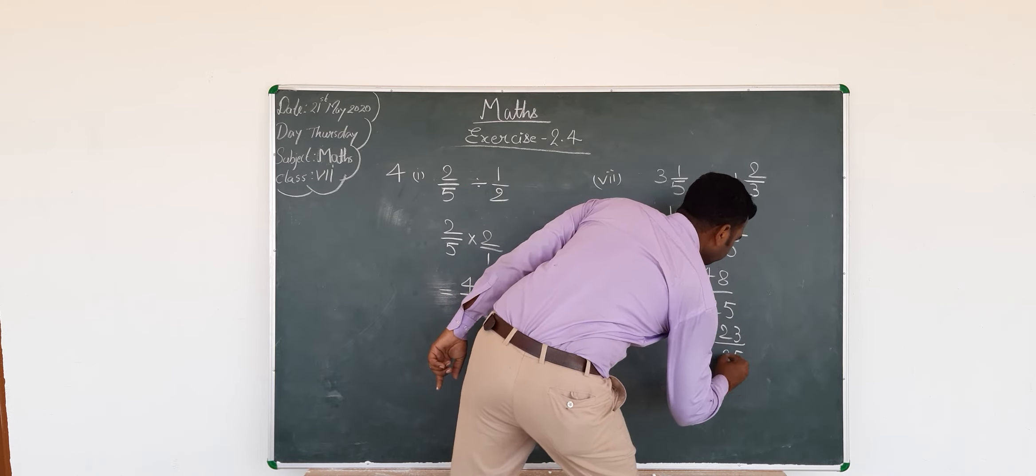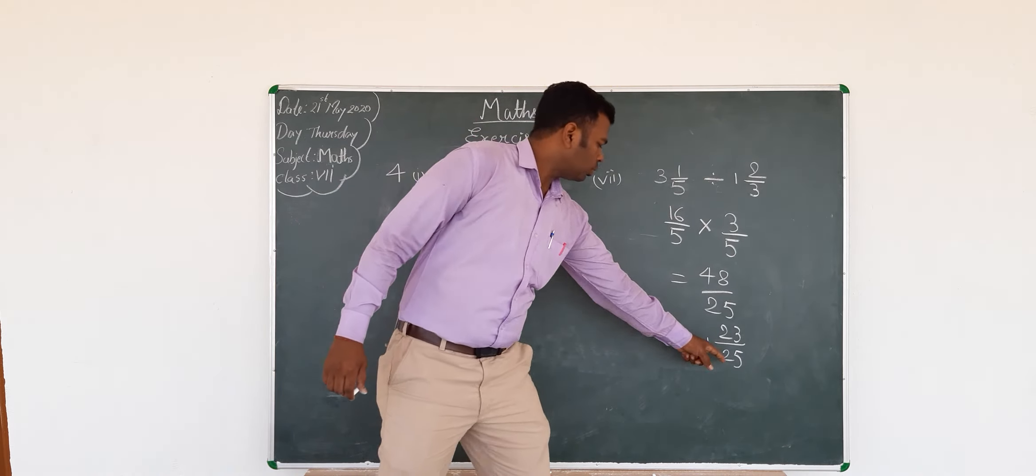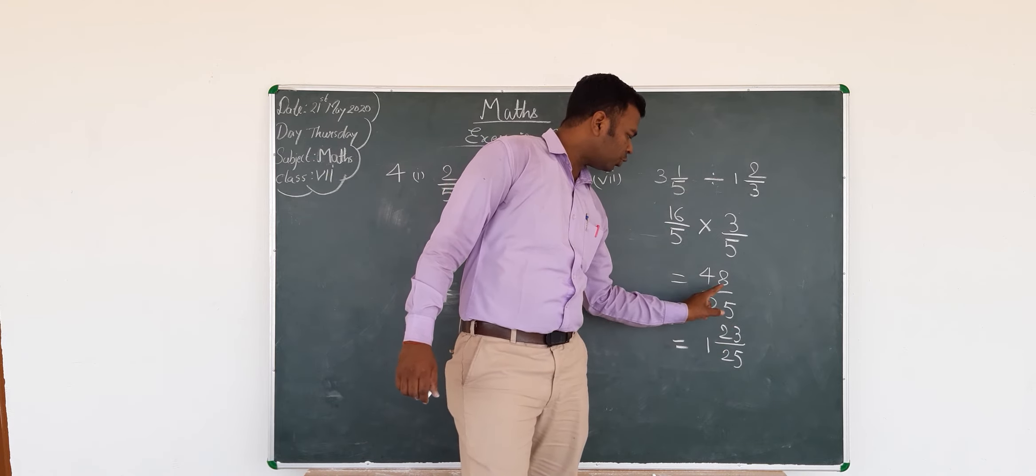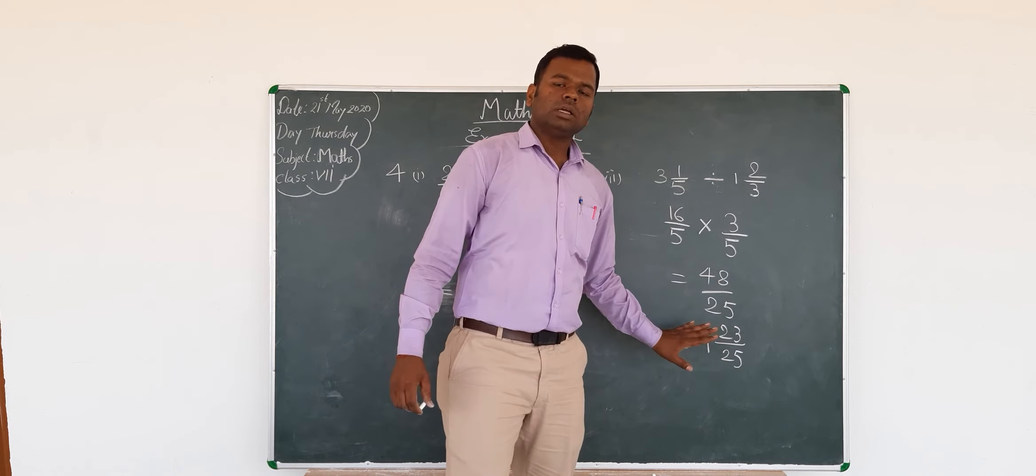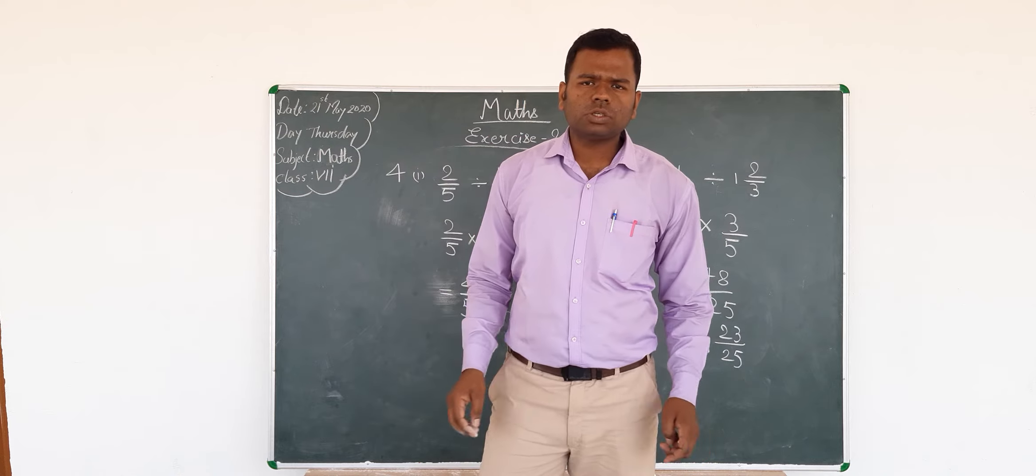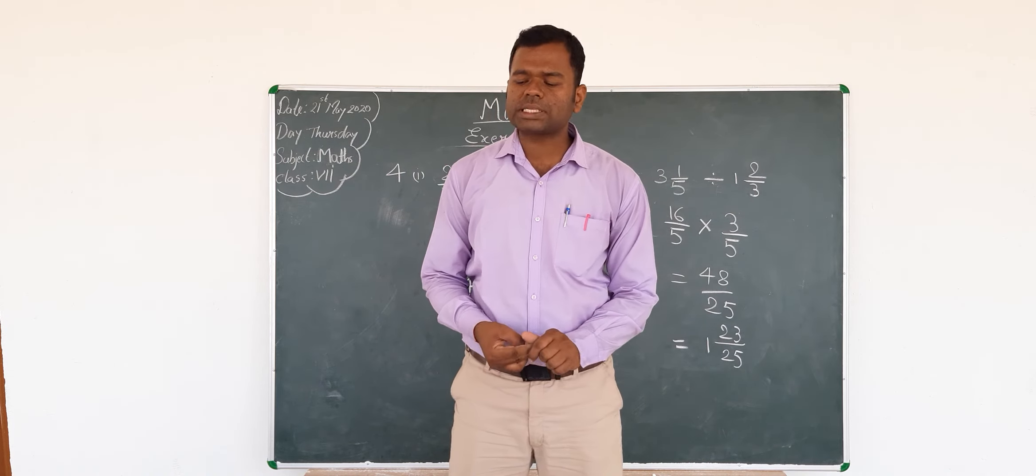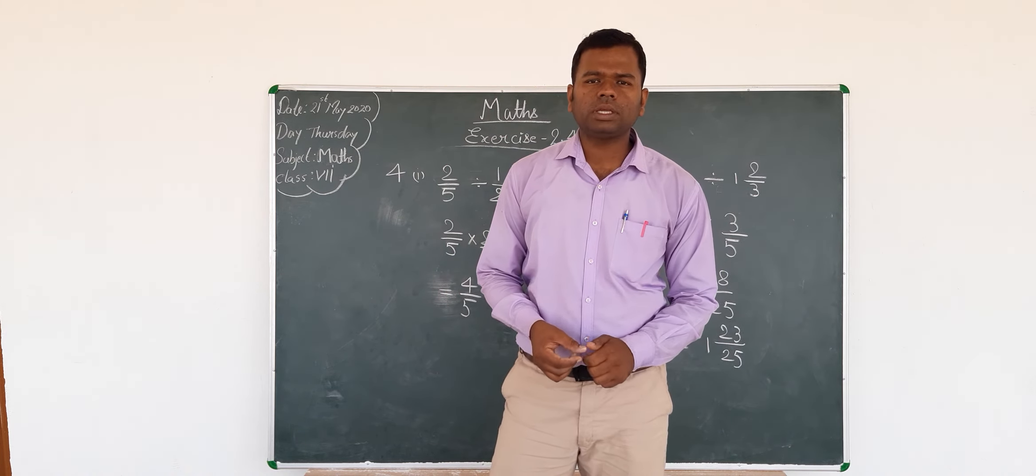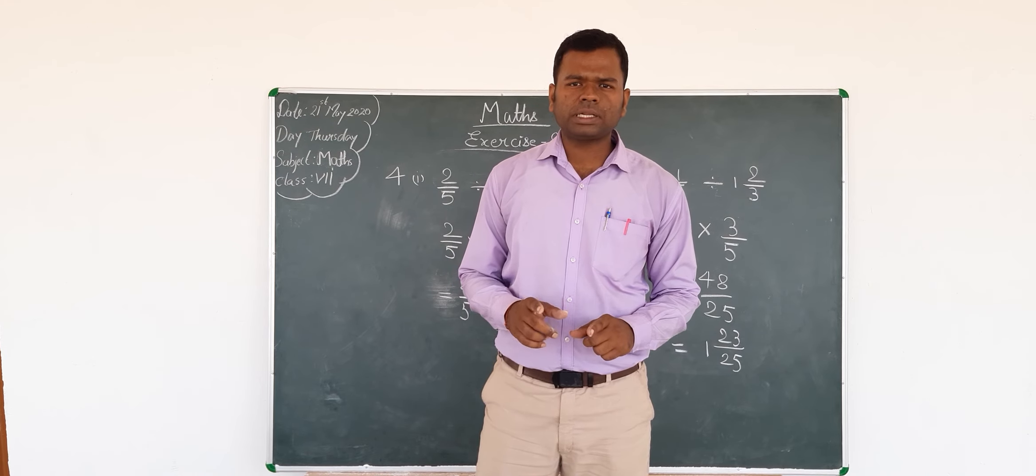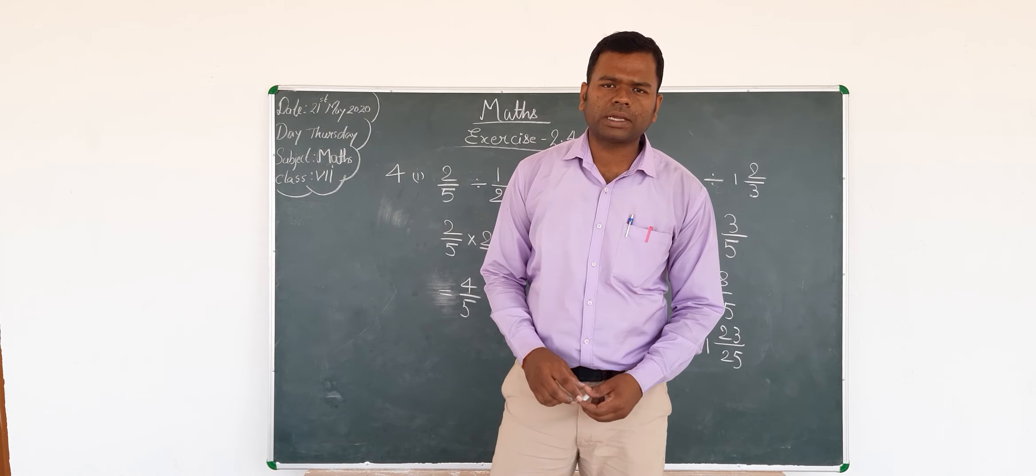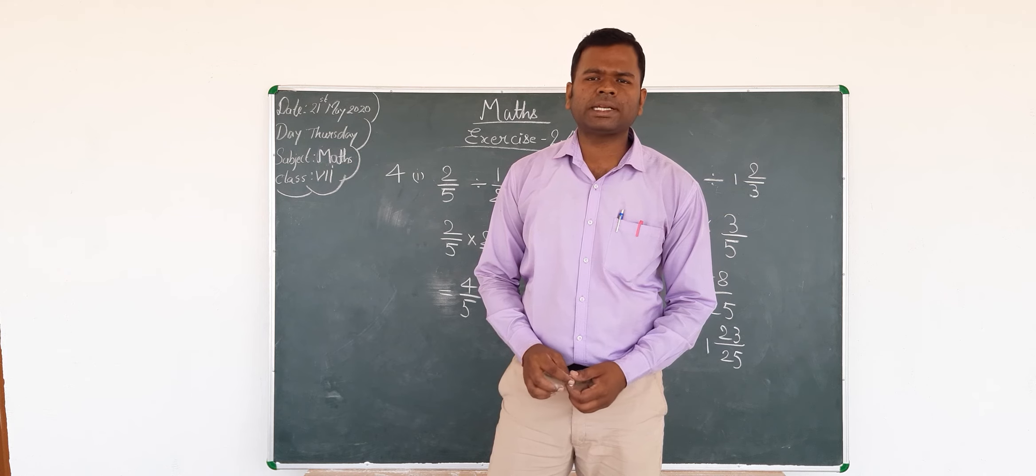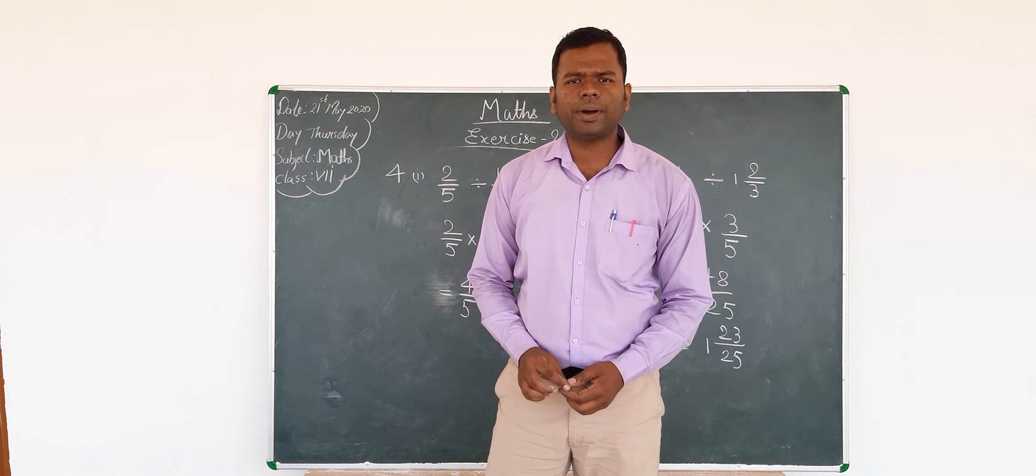You can change it to mixed fraction, that is 25 into 1 plus 23 upon 25, which is 1 23/25. My dear students, please solve all the questions of exercise 2.4 in your copy and send it to me in the WhatsApp group. I will provide you proper feedback. Thanks for being a part of Satyadev International School. Thank you kids, have a good day, bye.